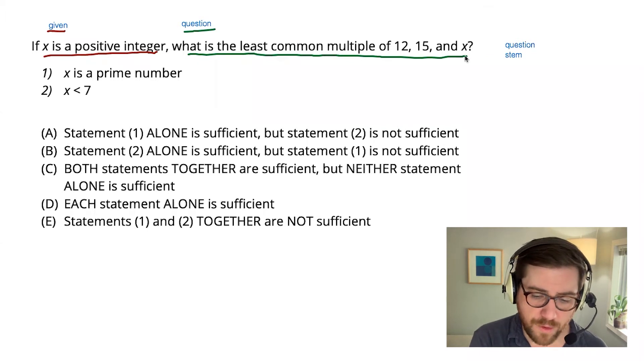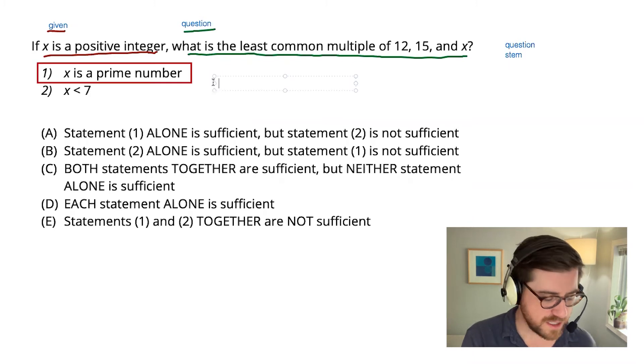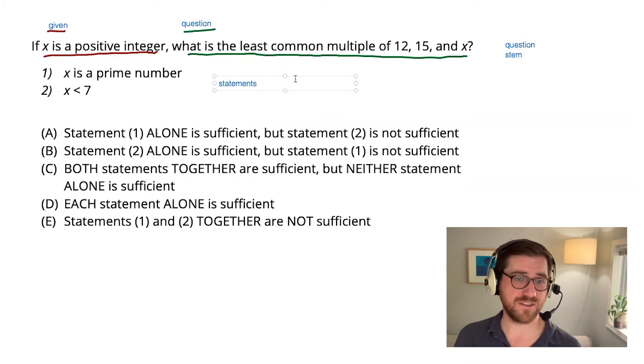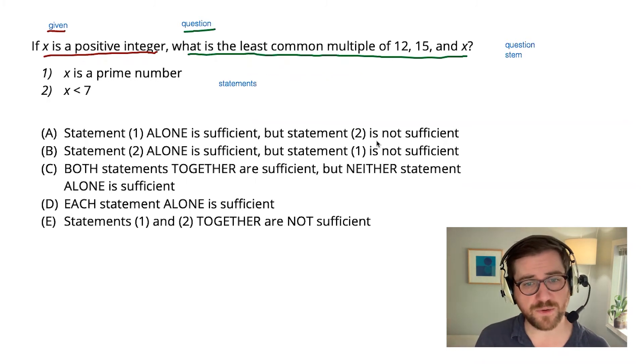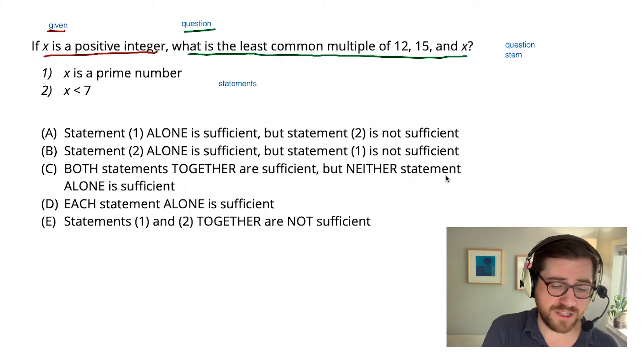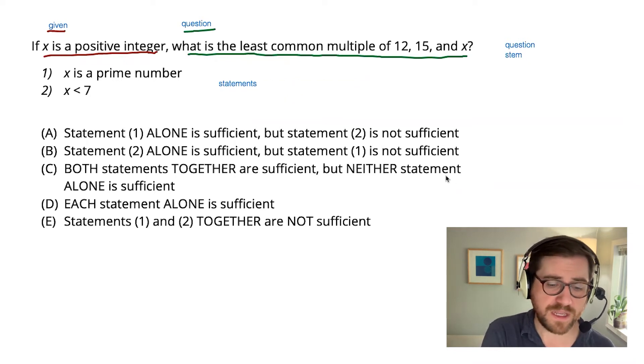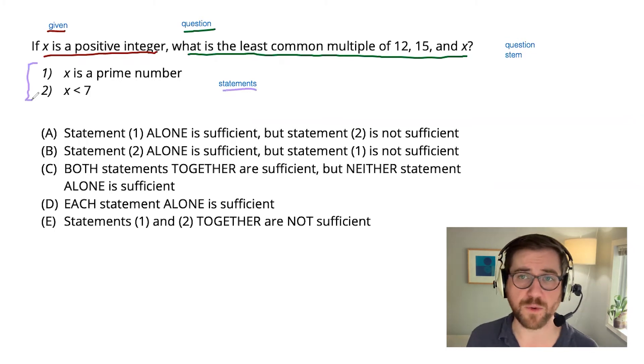Now down below what we have are the statements. And there's always going to be two of these, a statement one and a statement two. These are the givens. What you're ultimately trying to do here is not answer this literal question of what is the least common multiple. What you're trying to answer is essentially the meta question of whether this given information would actually be enough, would be sufficient to go answer the question.